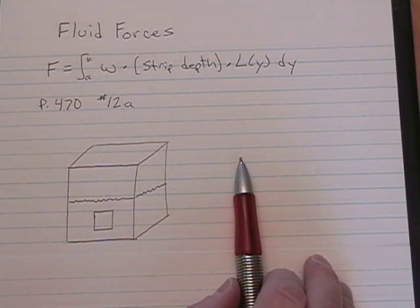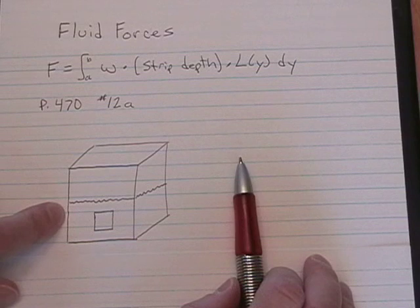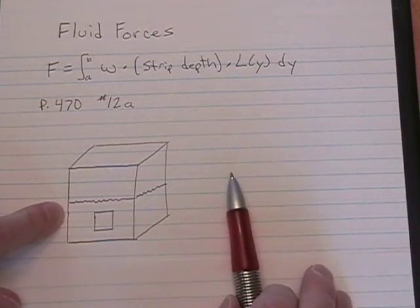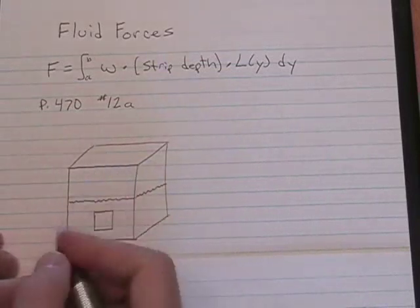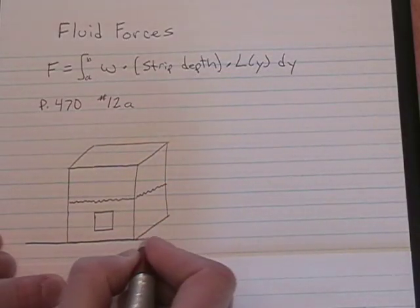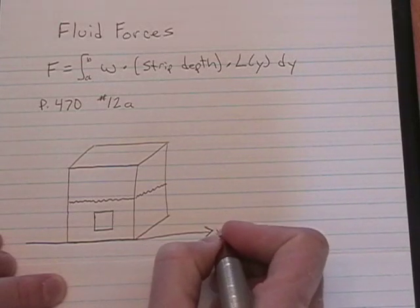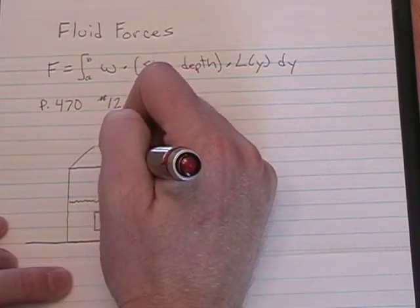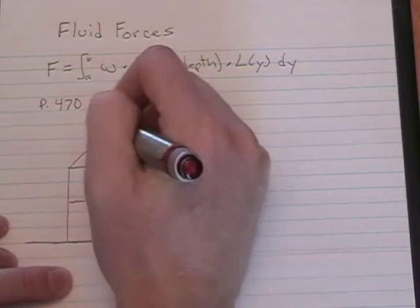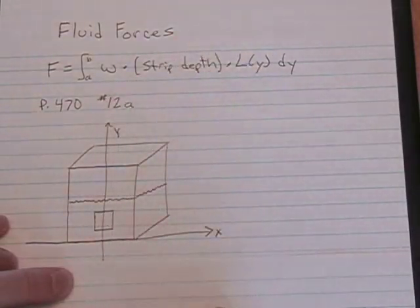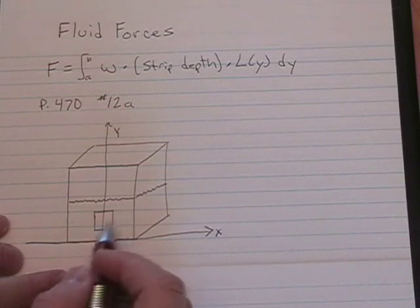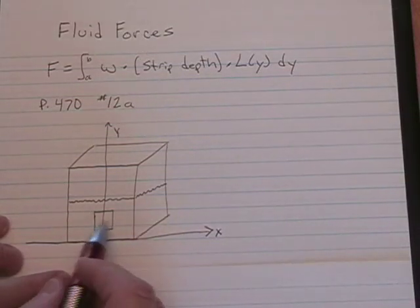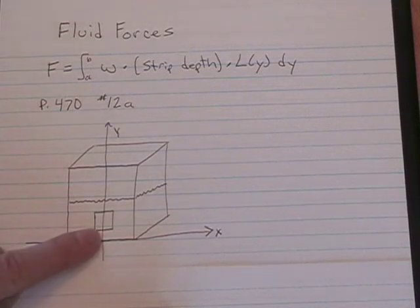Now, when you're working with these problems, you have to add an X and Y axis to your picture to establish a coordinate system. For this particular problem, I'm going to add my X axis right along the bottom of the tank. And I'm going to add my Y axis right down the middle of the plate. It's usually good to do that because if there's symmetry, it's a little easier to find out the formula for the L of Y.